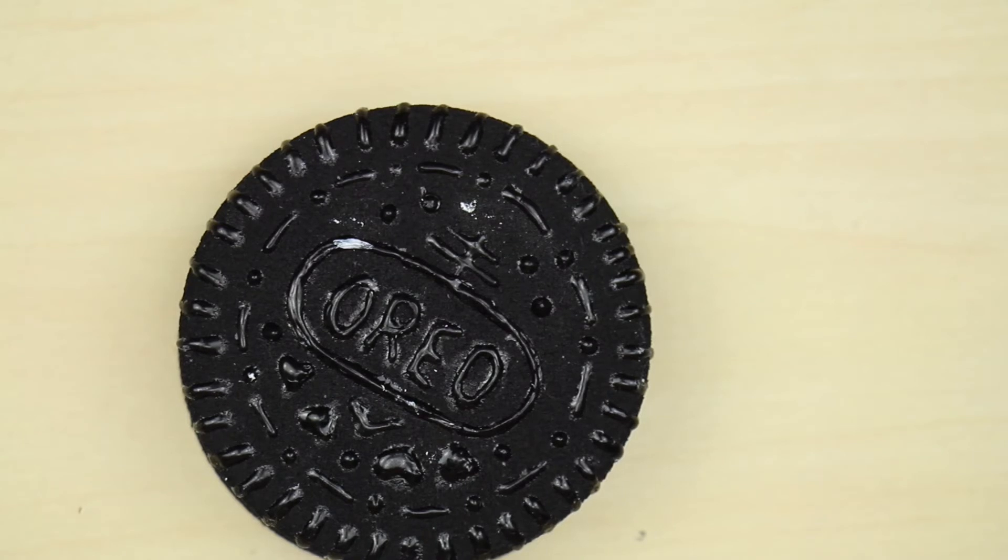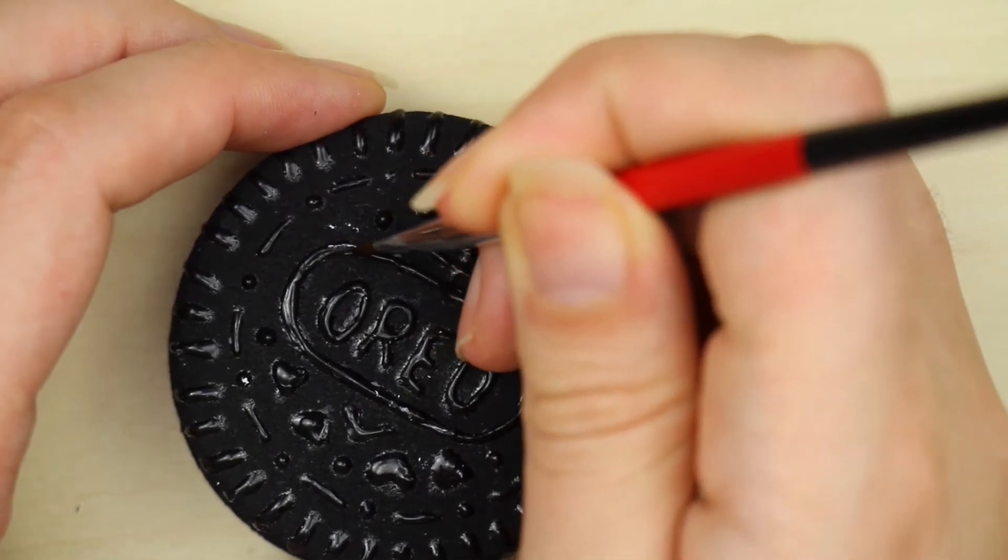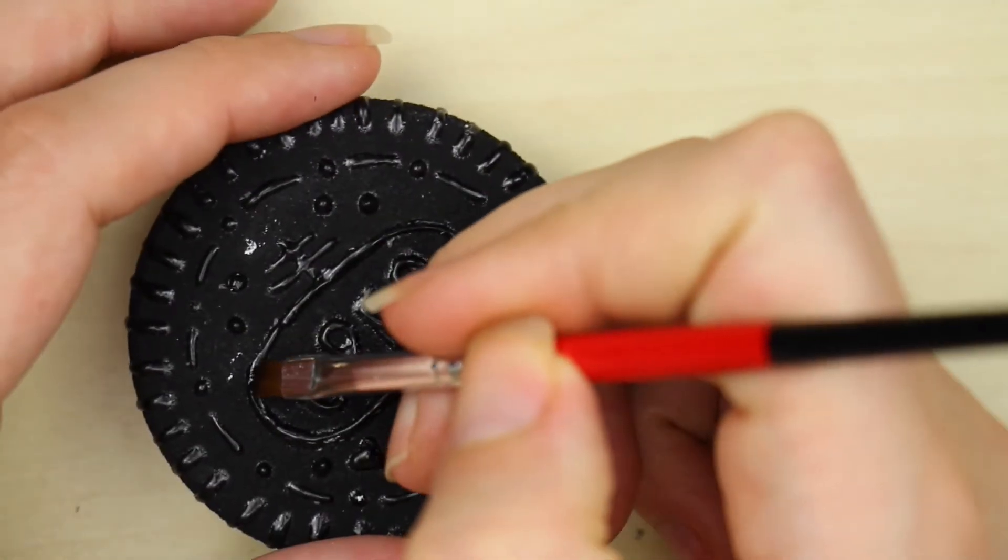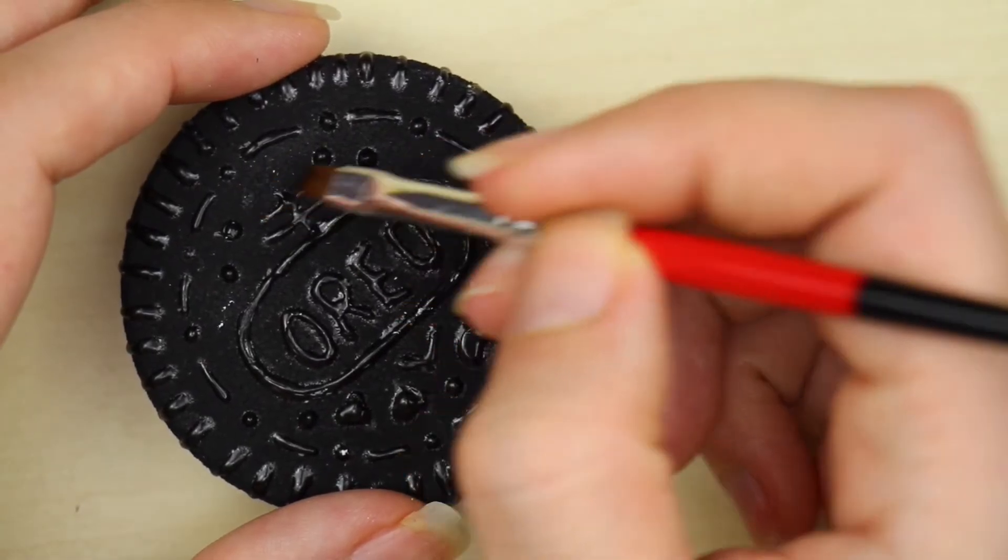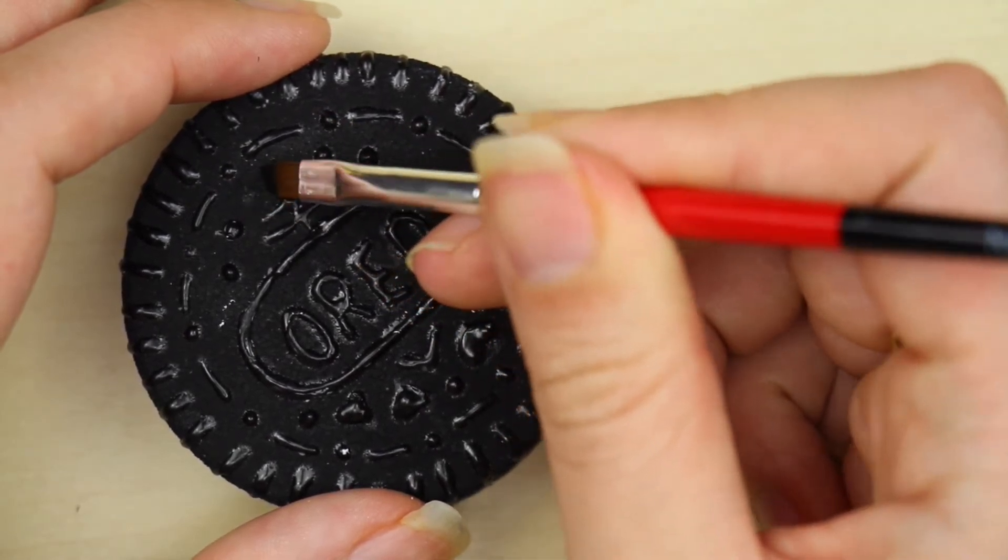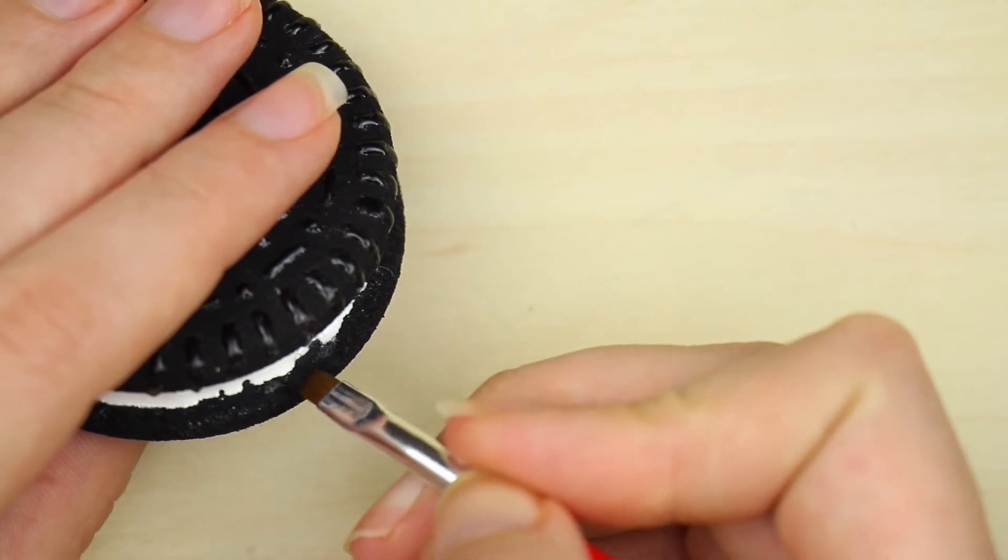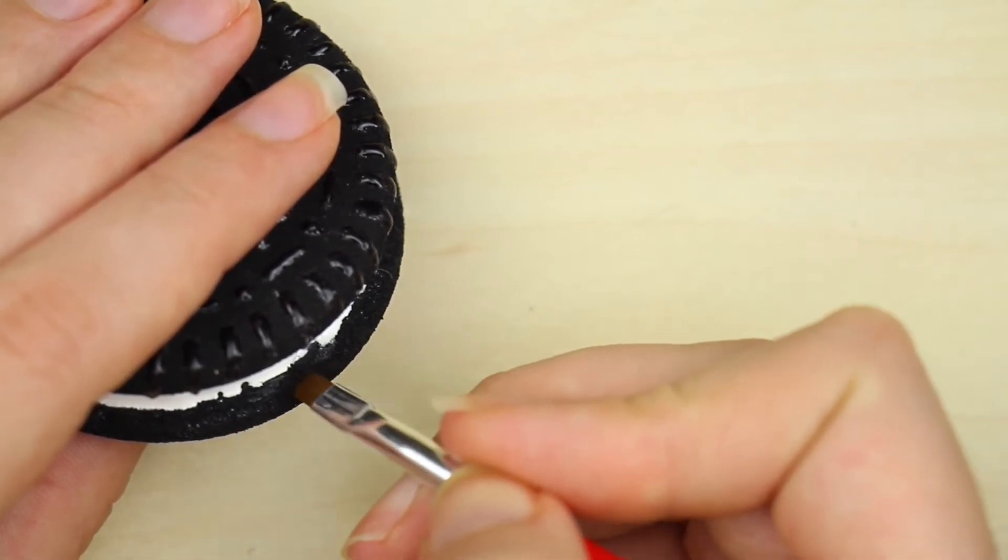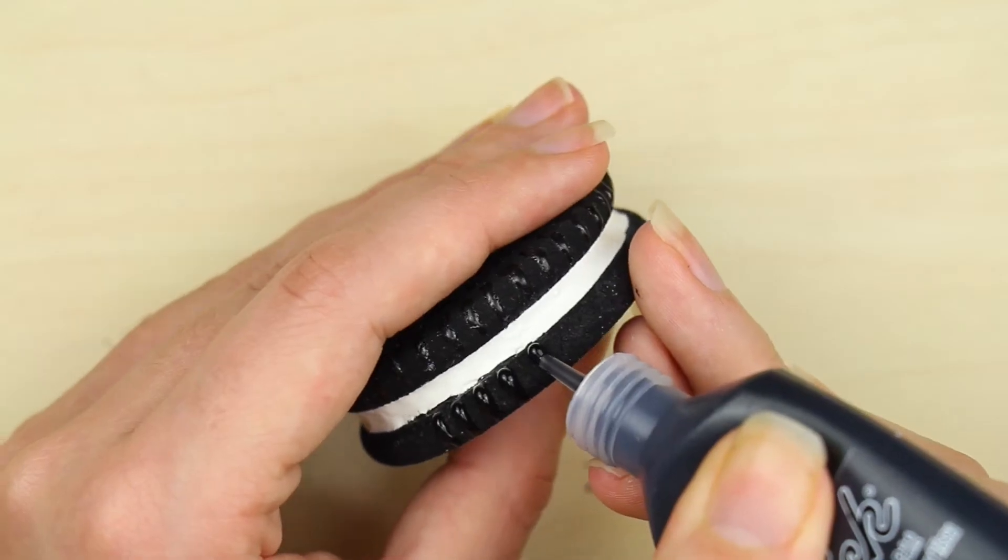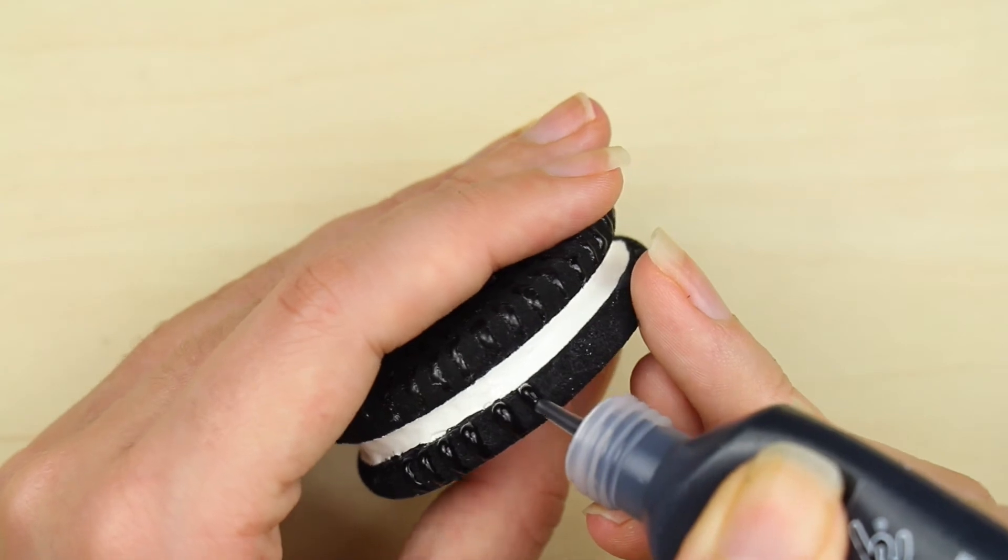If by mistake a little bit of white paint gets onto your Oreo, just clean it up with a little bit of acrylic paint. Same goes for the edges of the white filling. Just clean them up with a little bit of acrylic paint. Add any last details. In my case it was the edge of the bottom part, and you're done.